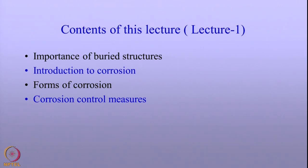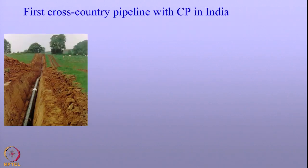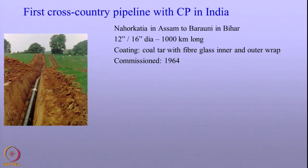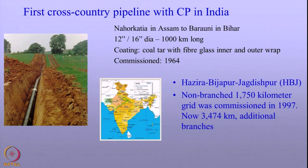If you look at the pipeline history in the country, the first pipeline was established in the year 1964 — it was from Nakhok Kathia in Assam to Barani in Bihar, about 1000 kilometers long. It was coated with coltard with fiberglass inner and outer wrap. Sometime in 1997, you had another pipeline between Azira and Jagdishpur going towards Bijapur, famously called the HPJ pipeline. It was 1750 kilometers long.